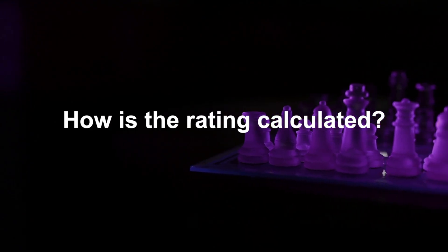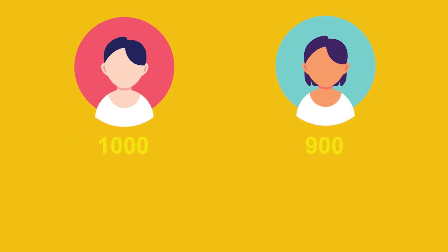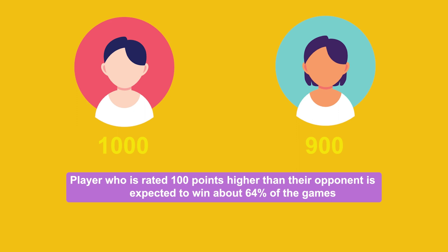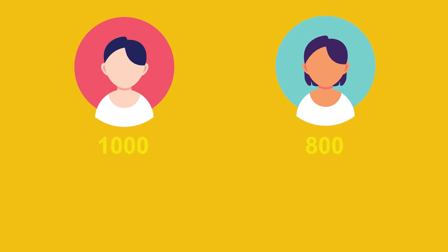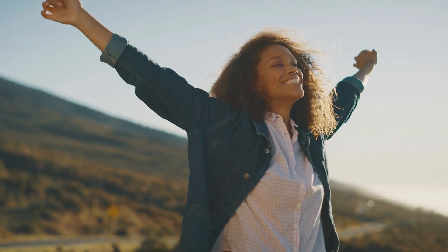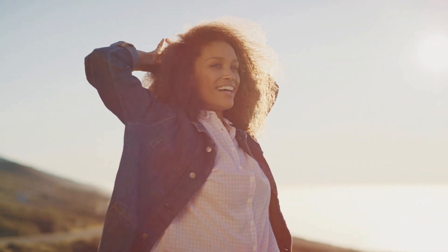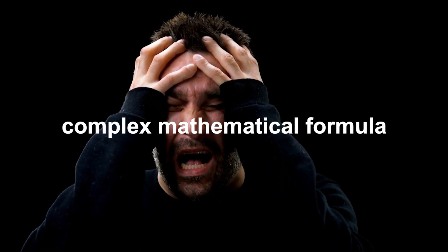Now, you must be wondering how this rating is calculated. As a general guideline, a player who is rated 100 points higher than their opponent is expected to win about 64% of the games, or roughly 5 out of 8 games. Similarly, a player with a 200-point advantage is expected to win about 75% of the games, or 3 out of 4 games. If a lower rated player wins, it is considered a significant achievement and they receive more points added to their rating. On the other hand, the higher rated player is penalized with a decrease in their rating. The exact amount of points won or lost after a game is determined through a complex mathematical formula.